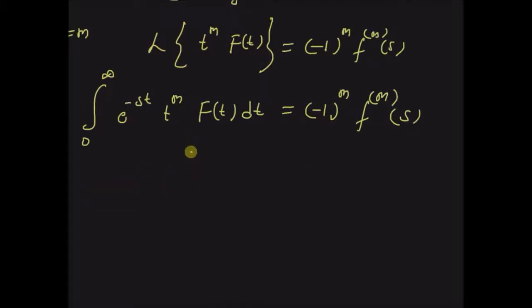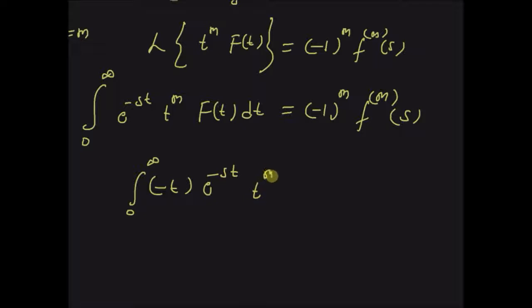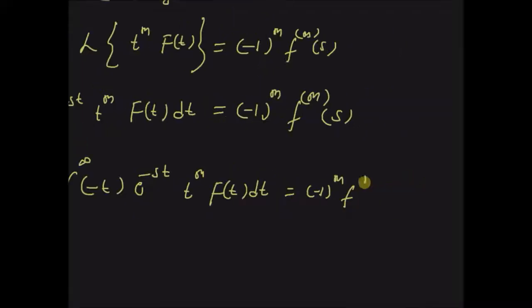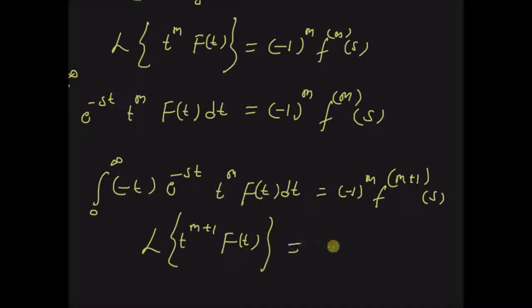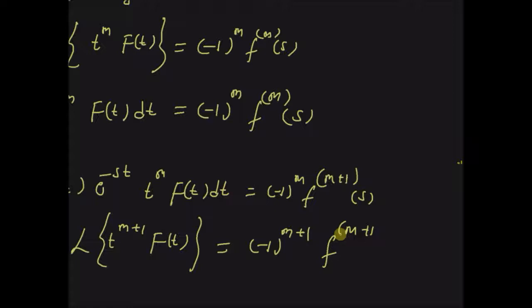We have to prove that the theorem is also valid for n equal to m plus one. Differentiating this equation on both sides with respect to s, we have the integral from zero to infinity of (-t) · e^(-st) · t^m · f(t) dt, equal to (-1)^m times the (m+1)th derivative of F(s). By sending the minus one to the right side, we can write that the Laplace transform of t^(m+1) · f(t) is equal to (-1)^(m+1) times the (m+1)th derivative of F(s).